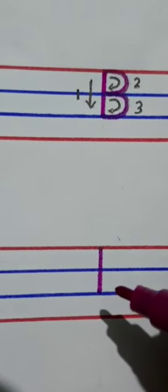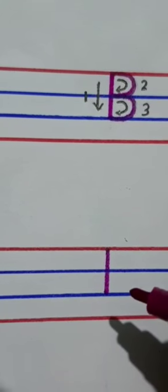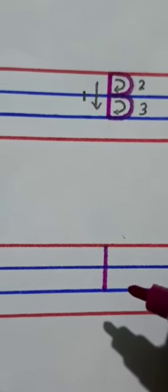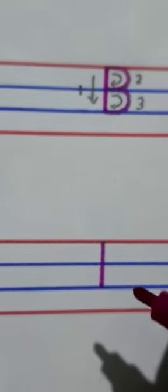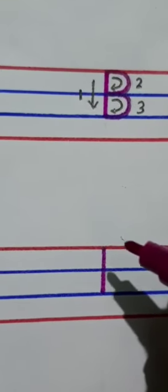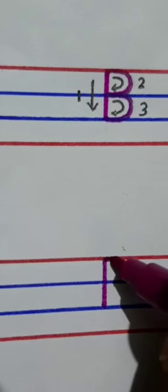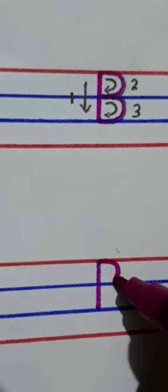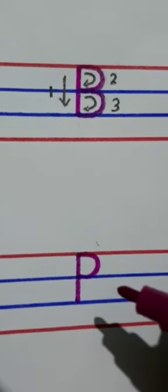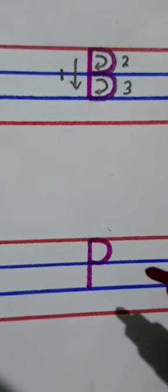Now in second step we are going to make one right curve. We will put our pencil on the first red line, move the pencil down towards the right side making a slight curve and touch the second line which is blue in color.